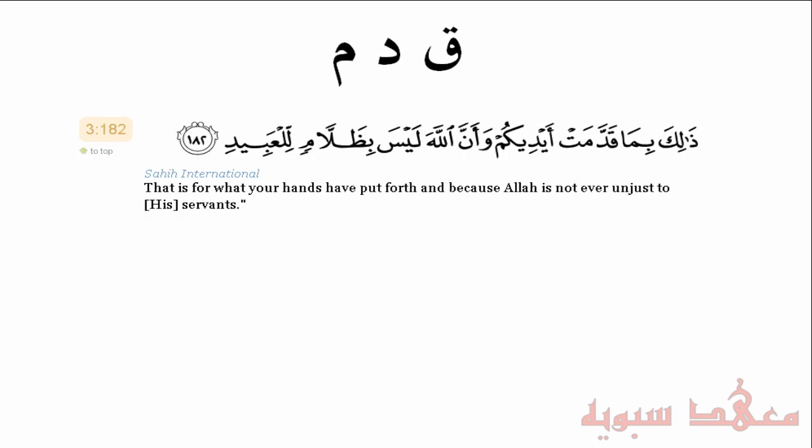The final ayah is: dhalika bima qaddamat aydikum — 'That is for what your hands have put forth.' There it has the meaning of bringing something in front of oneself, but this bringing in front is based on one's past actions. The word qaddamat doesn't just mean to bring something, but that this bringing is effected by what came before it — one's past actions, whether good or bad. One could not understand this without knowing the Arabic language. May Allah give us understanding. Subhana rabbika rabbi al-izzati amma yasifoon, was-salamu ala al-mursaleen, wal-hamdulillahi rabb al-alameen.